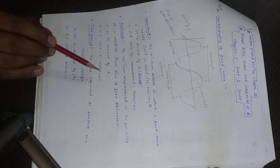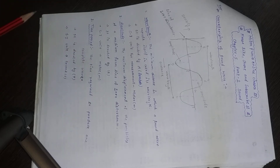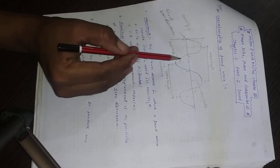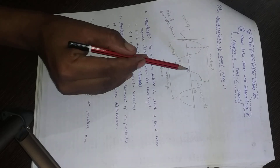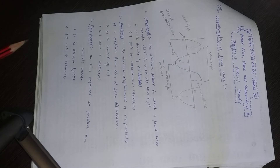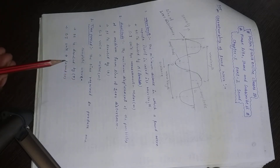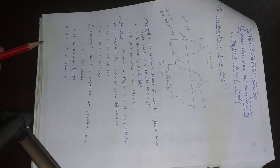The SI unit of amplitude is meter. Now, time period — consider one single wave. How much time does one complete wave take? That is known as time period. The time required to produce one complete wave is known as time period, and it is denoted by capital T.